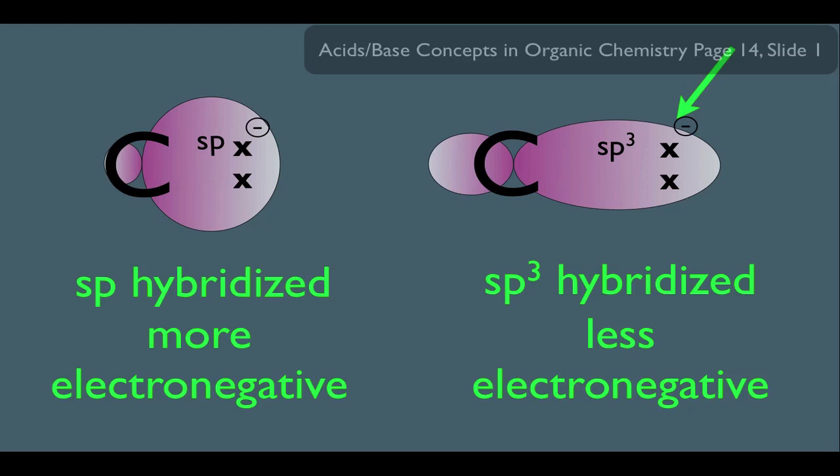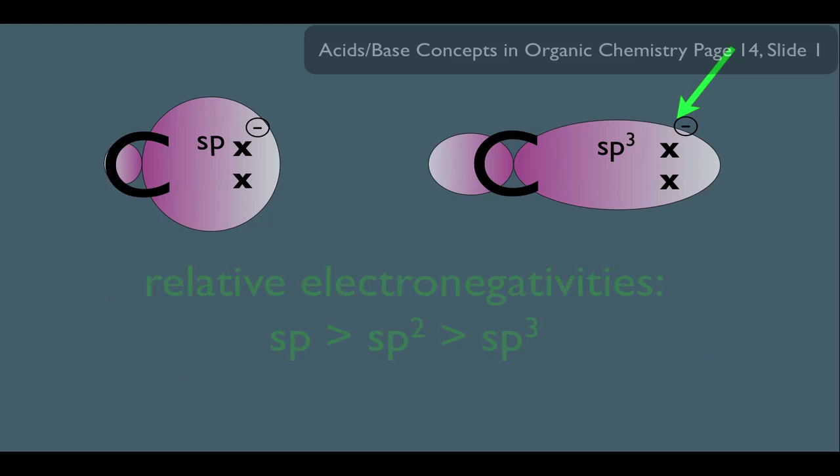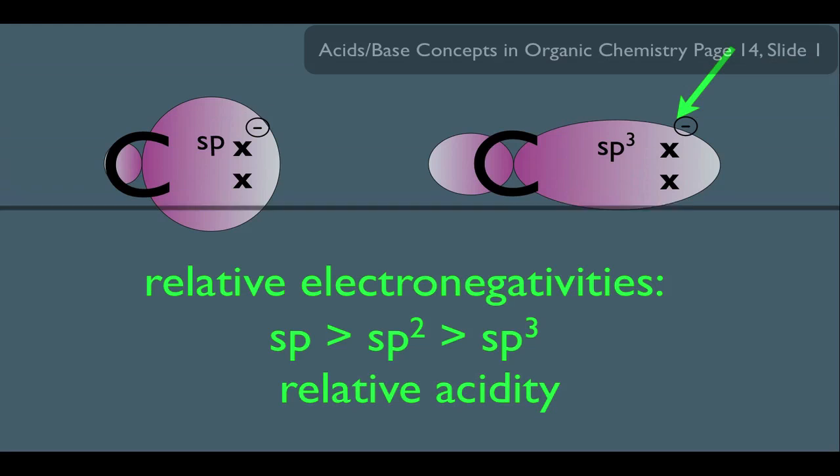In fact, I'd like you to know this rule of thumb. When it comes to relative electronegativities due to hybridization, let's know that sp is greater than sp2, which is greater than sp3. And because of this, this is also the trend for relative acidity.